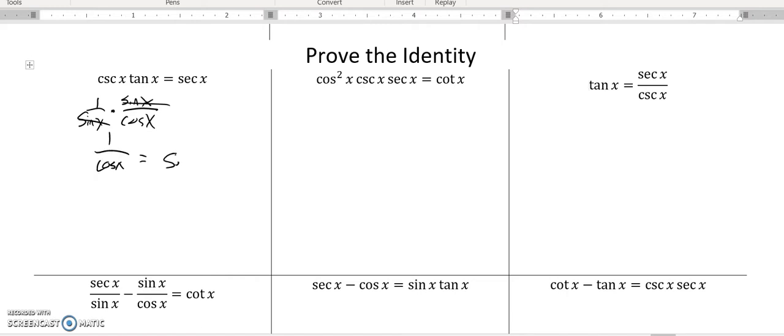Let's do this next one: cosine squared times cosecant times secant equals cotangent. This is already in terms of cosine. Cosecant is one over sine—this is just cosine squared over one—and secant is one over cosine.